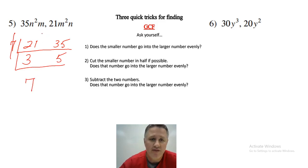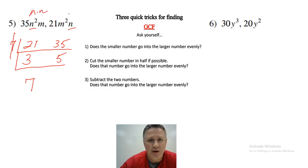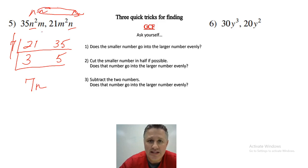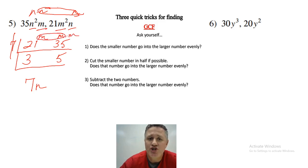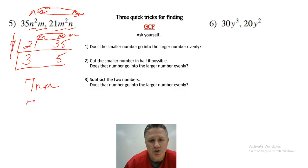Now let's look at the variables. How many Ns do I have in common? Over here I've got two Ns, and over here I have one — so we share one in common: 7N. Now the letter M. How many Ms do we share in common? Here I have one, and here I have two — so we share one in common. The answer is 7NM. You could reverse it and say 7MN — either way it's correct. Try to put the coefficient in front.